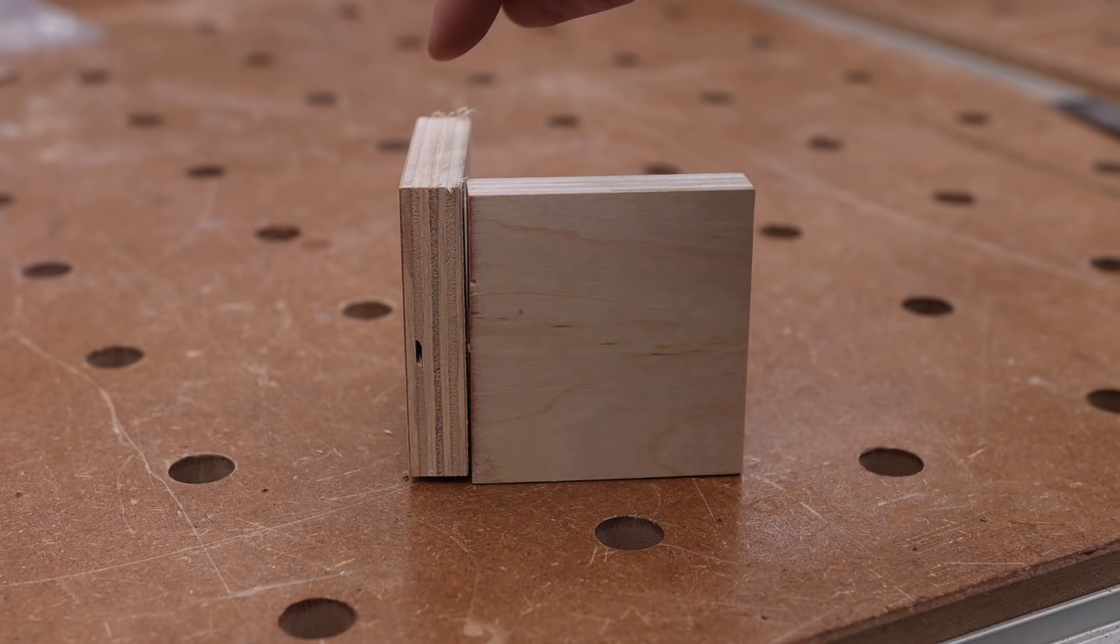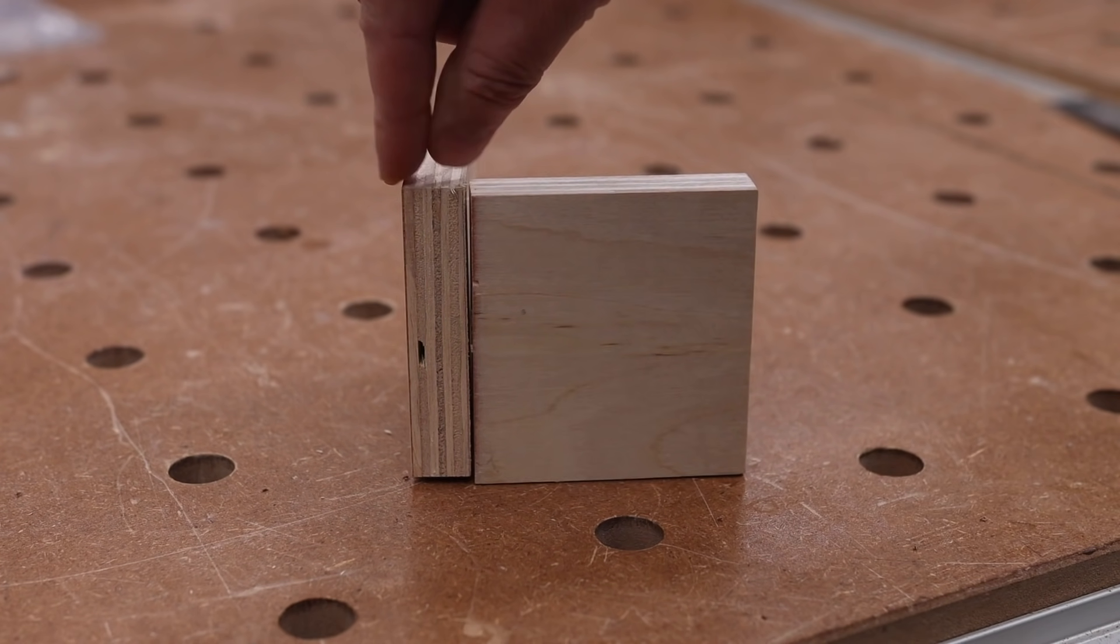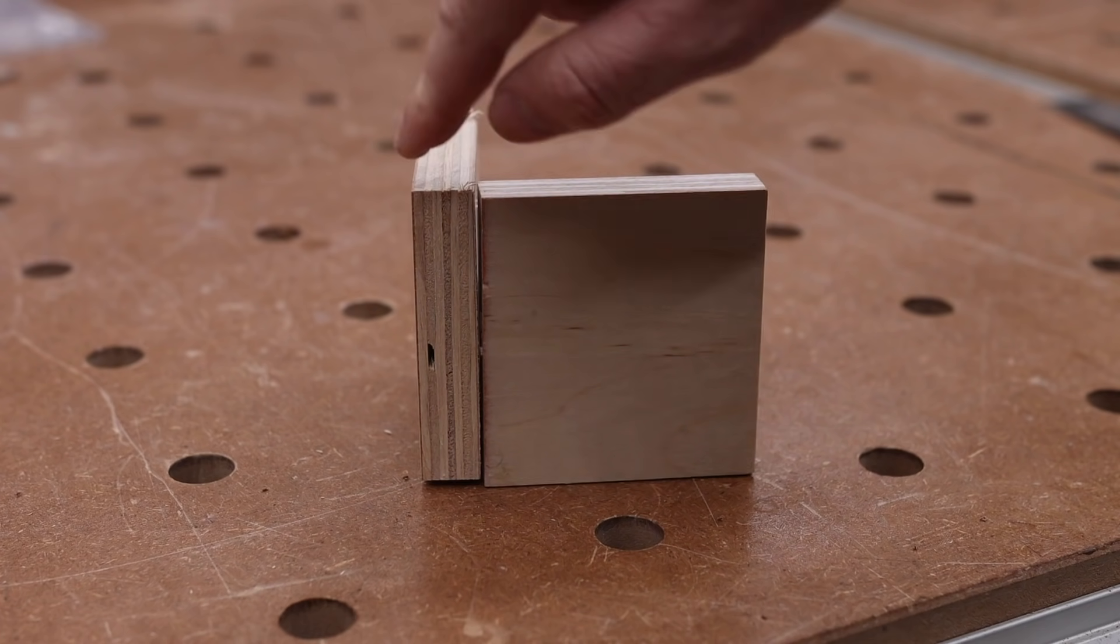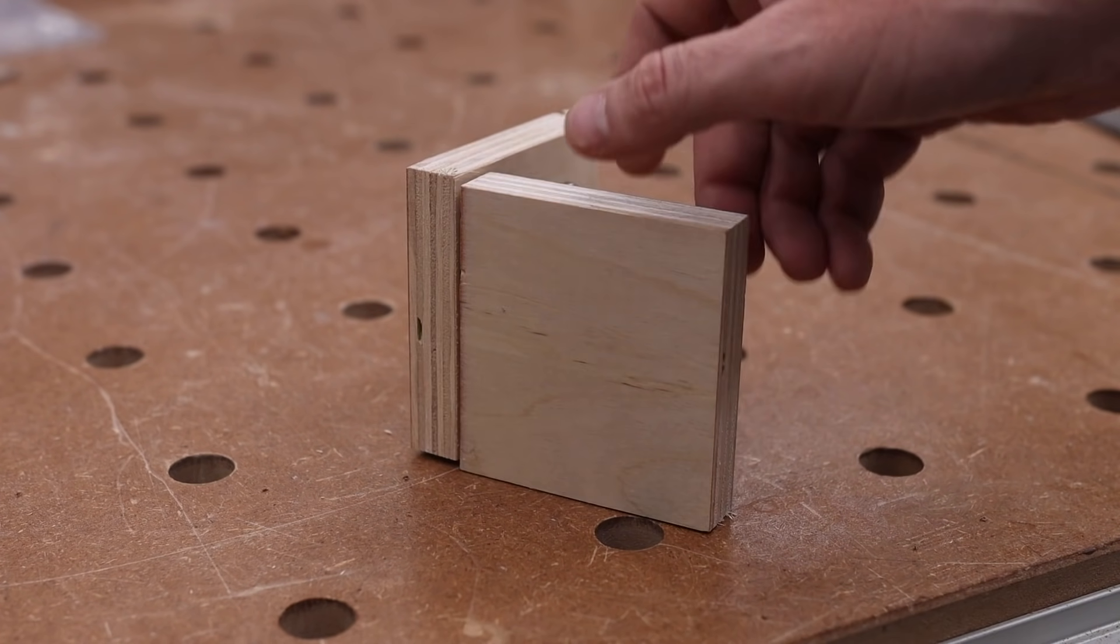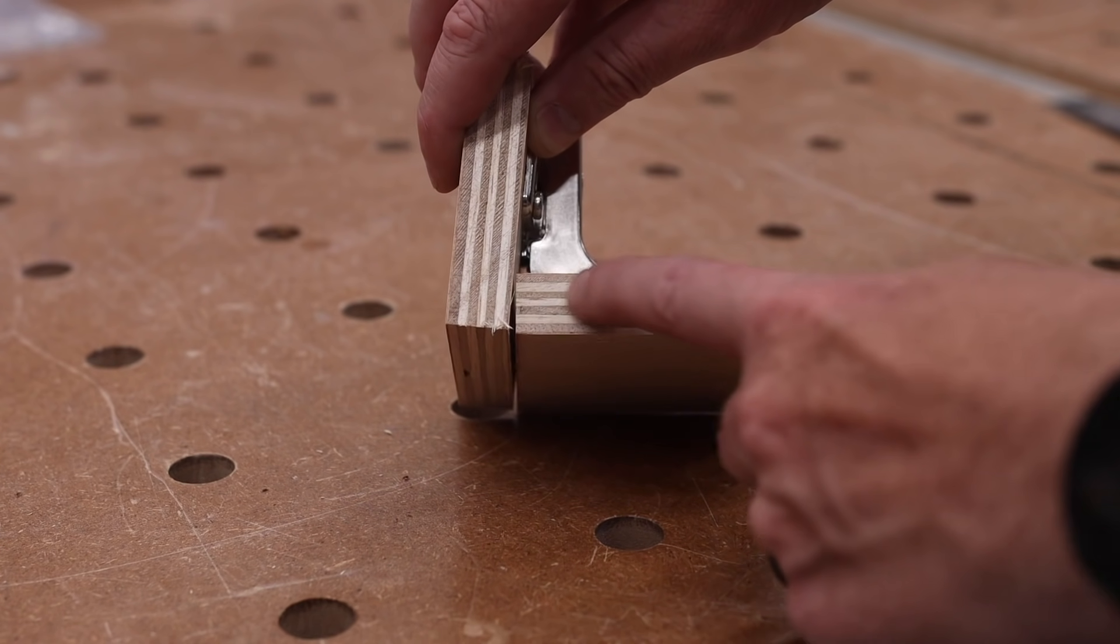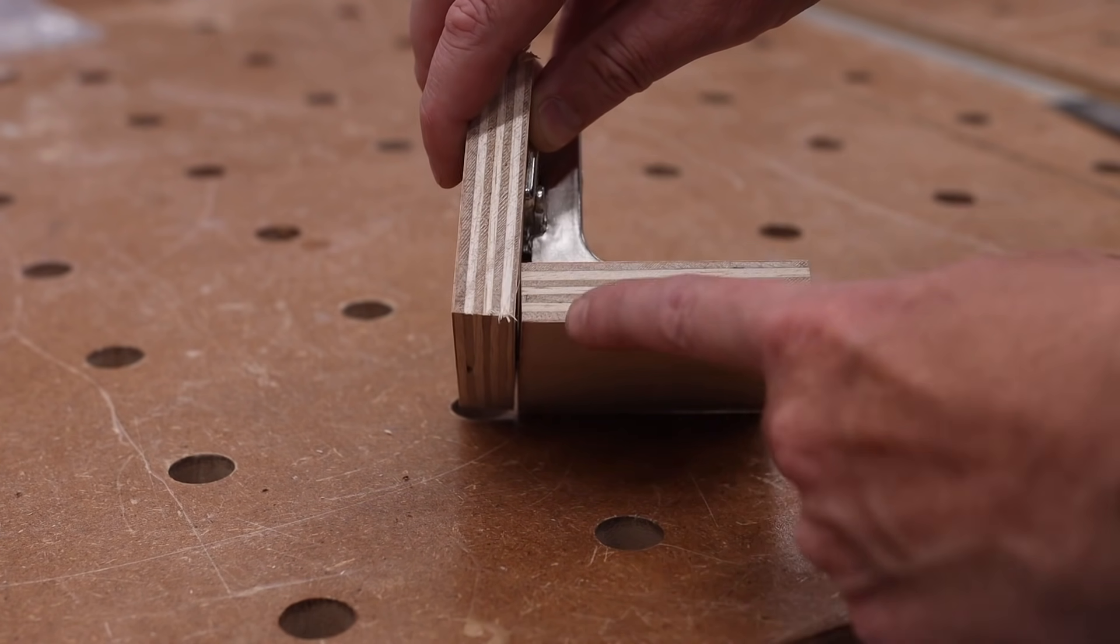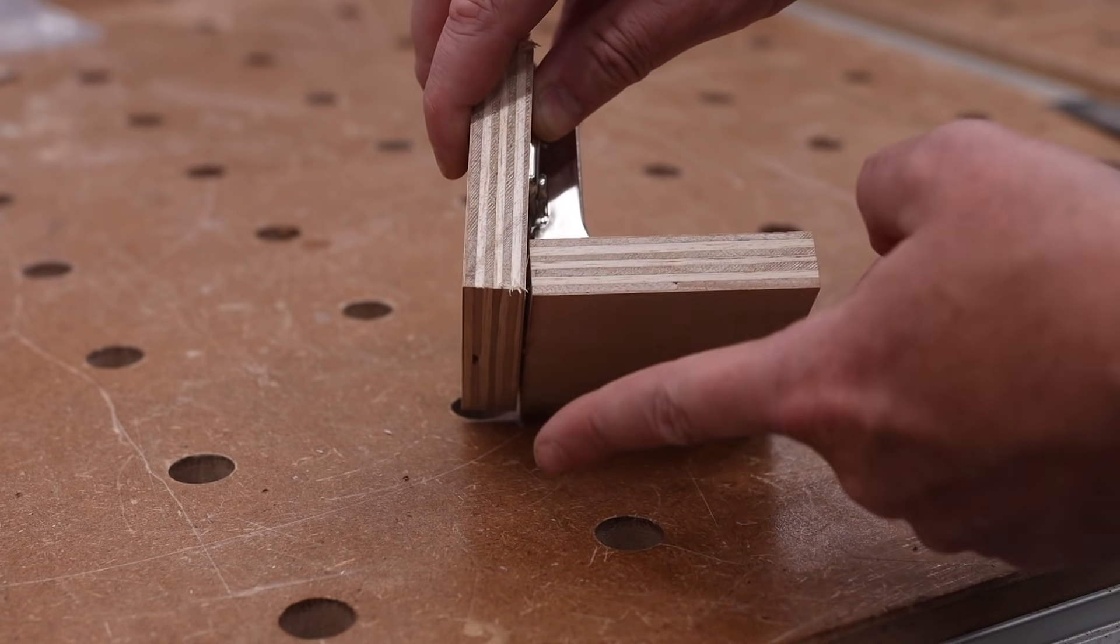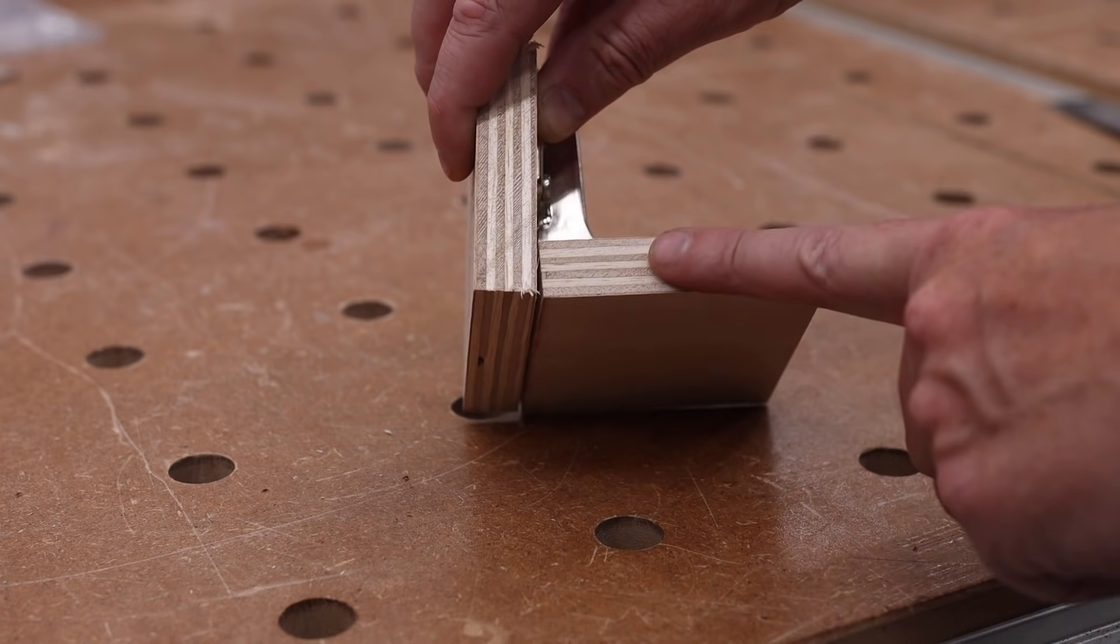When we're talking about a frameless cabinet, what we're referring to is that the sides is just the thickness of whatever material you're using. There is no face frame there. And then with an inset door, the door is actually inset into the cabinet. So it's not overhang.